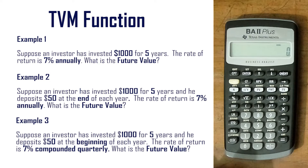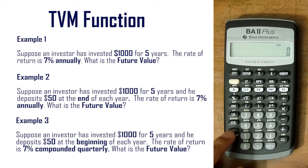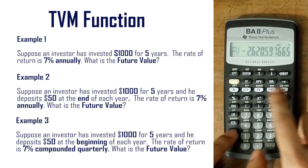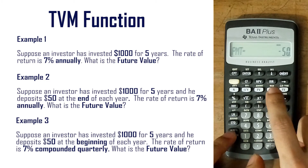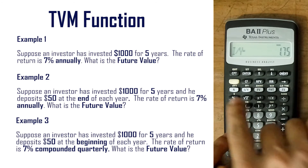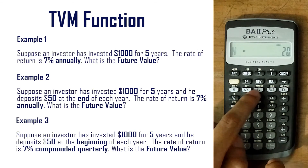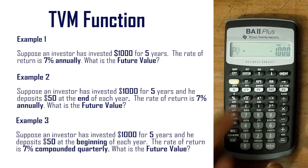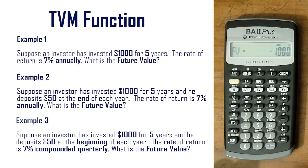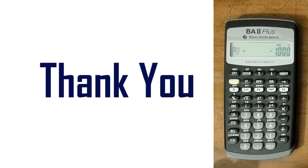In summary, if we have any four values of time value of money, we can compute the last one by pressing CPT and the corresponding key. For example, if we have future value, payment, interest rate, and number of periods, we can get PV by pressing CPT then PV. This is the time value function of the BA2 Plus calculator. Thank you so much.